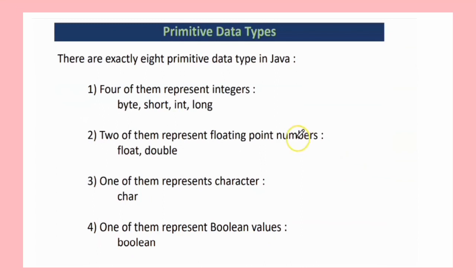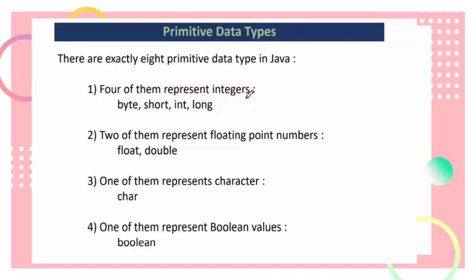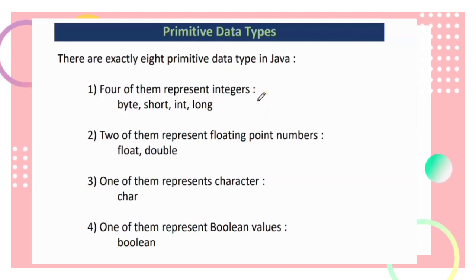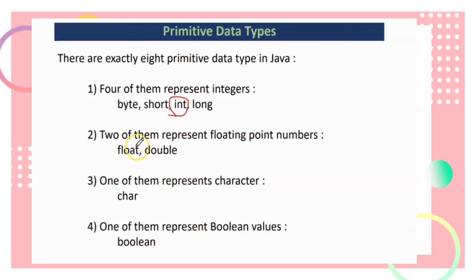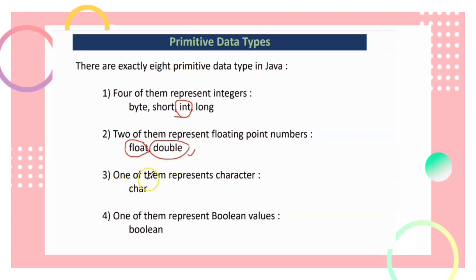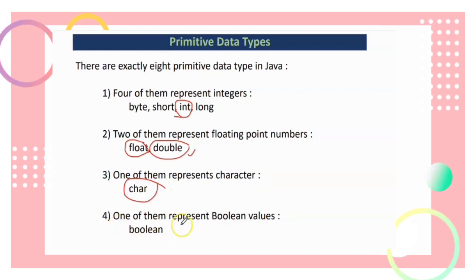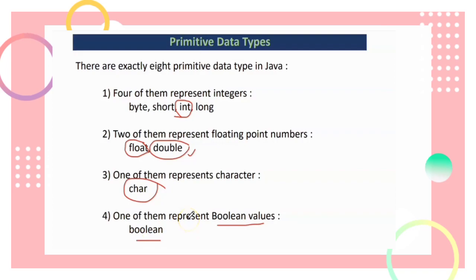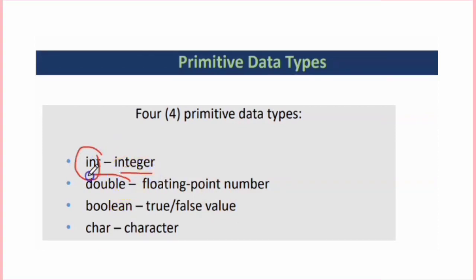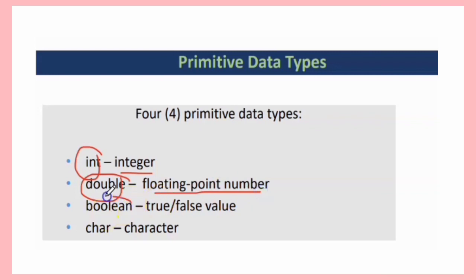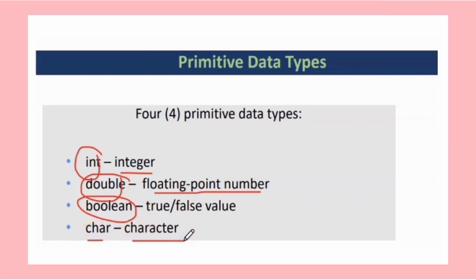The first group has four types that represent integers: byte, short, int, and long. Usually for our purposes we use integer. The second group has two that represent floating points: float and double. The third represents characters using char, and the fourth represents Boolean values using boolean — used to check whether a value is true or false.